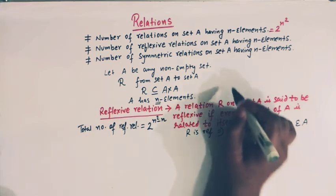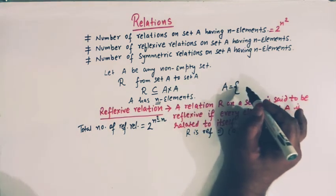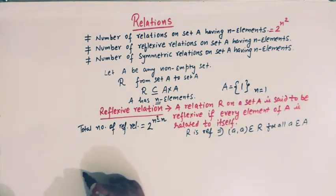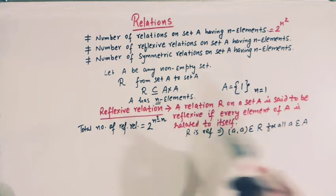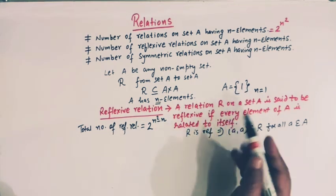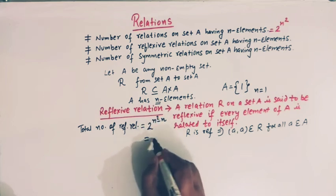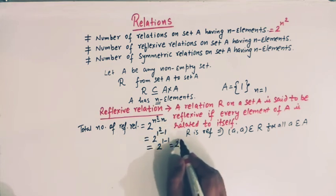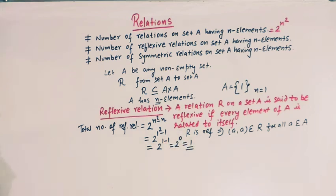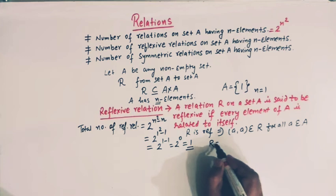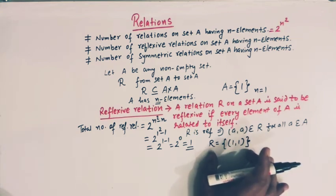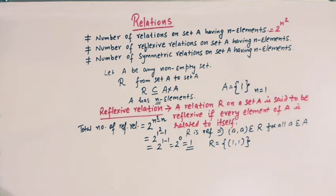The formula for the total number of reflexive relations on set A having n elements is 2 raised to n square minus n. For example, if set A has only one element, then n is 1. The total number of reflexive relations is 2 raised to (1 square minus 1), which is 2 raised to 0, that is 1. So there is only one reflexive relation, given by the set {(1,1)}.